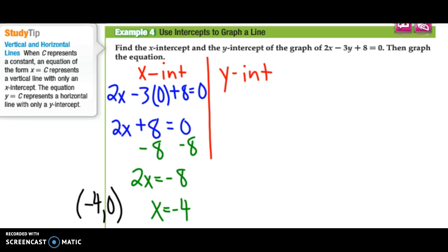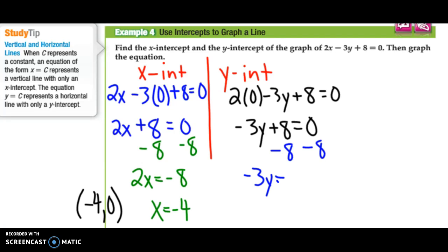The y-intercept is similar, but we put a 0 in for x. So we say 2 times 0 minus 3y plus 8 equals 0. Well, 2 times 0 is 0, goes away. I get negative 3y plus 8 equals 0. I subtract 8 from both sides, I get negative 3y is equal to negative 8, divide by negative 3, and you get y equals 8 thirds. Then that would be the point to put a 0 in for x, and y is 8 thirds.